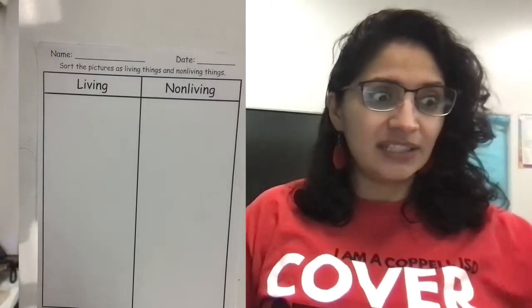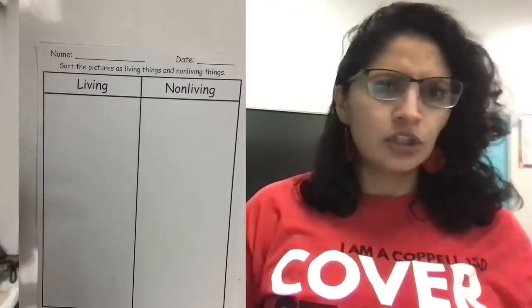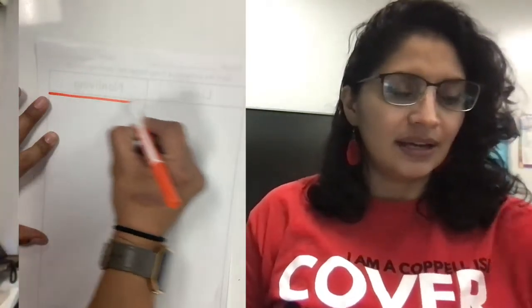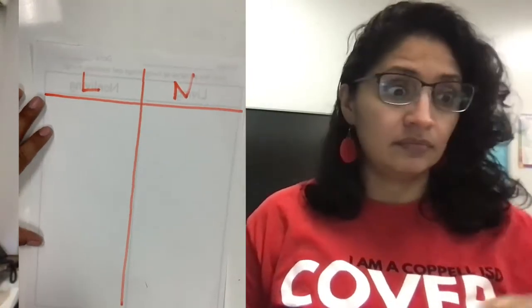Just like you're growing right before our very own eyes. And with the help of the anchor chart we did just a little bit ago, I want you to tell me — are these pictures living or non-living? So we have this T chart in Schoology. It's called a T chart because it looks like a T. Friends, remember, you don't have to print it out. Just grab a piece of paper and draw a T, and then put the L for living and the N for not living.